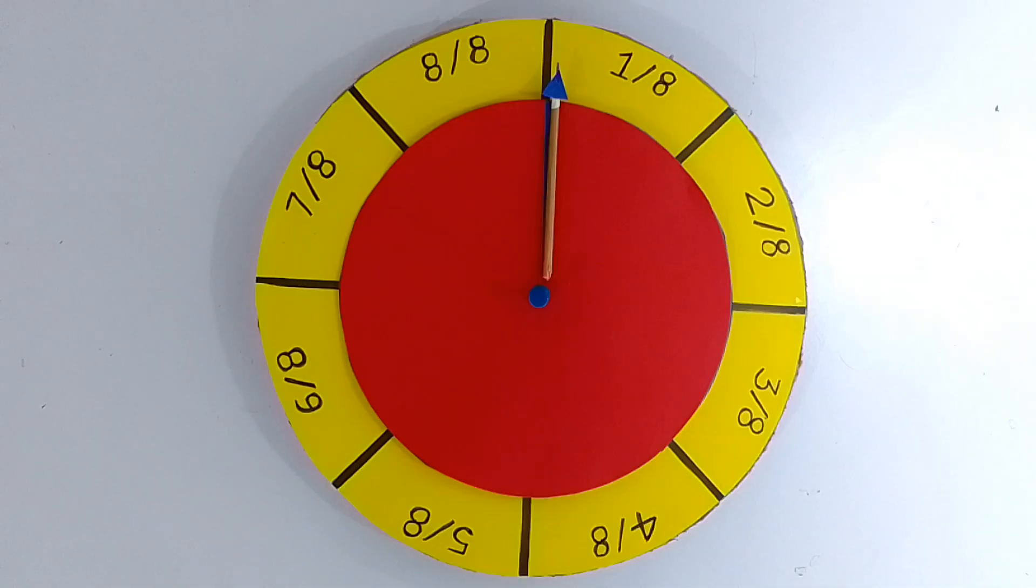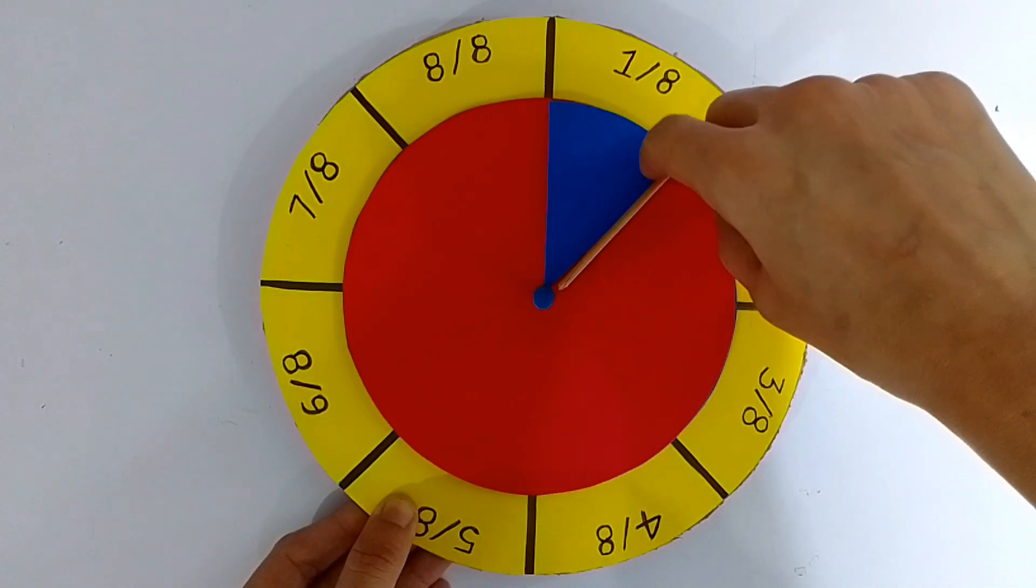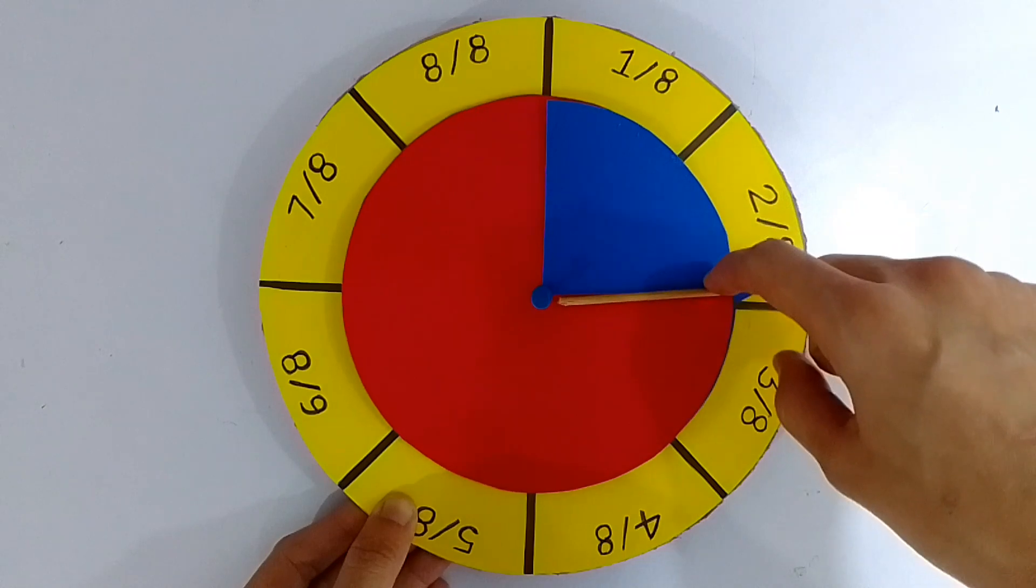Now, it's time to test the spinner. Spin the arrow and see where it stops. The number it points to is a fraction.